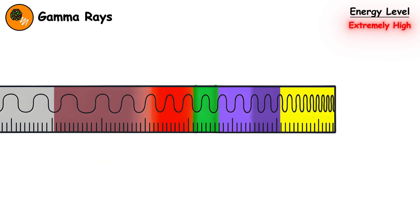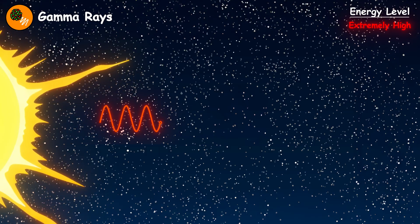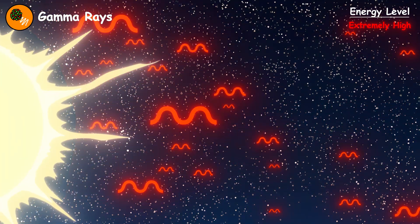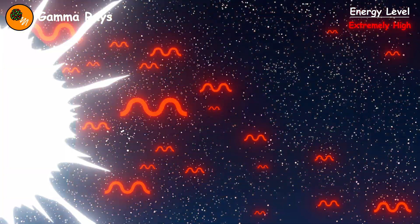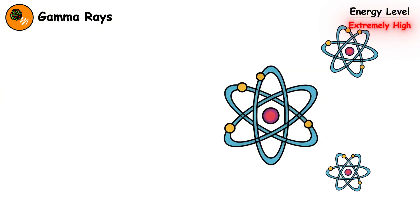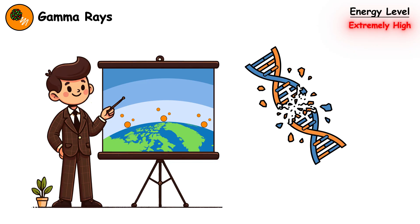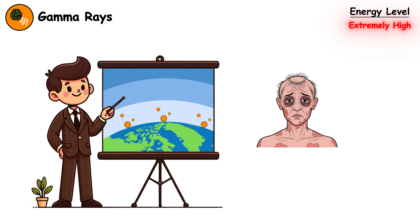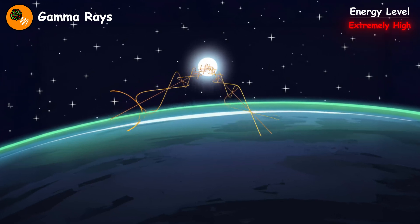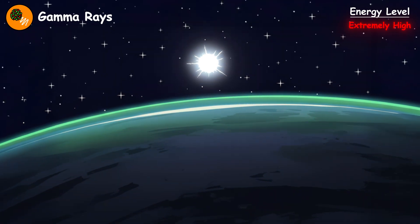Gamma rays represent the most energetic form of electromagnetic radiation. The sun produces relatively few gamma rays during normal operation, but solar flares can generate intense bursts of gamma rays lasting minutes. Each gamma ray photon carries enough energy to rip electrons from atoms and shatter molecular structures instantly. If they reached Earth's surface in quantity, they would destroy DNA, kill cells, and cause radiation sickness within minutes of exposure. Our atmospheric shield provides complete protection by absorbing these rays in the upper atmospheric layers. The absorption slightly heats this region during solar flares.